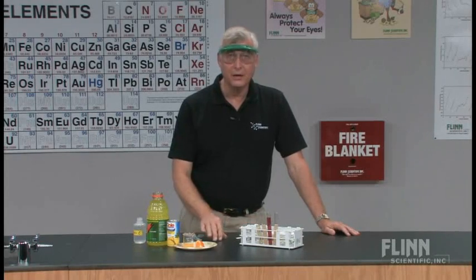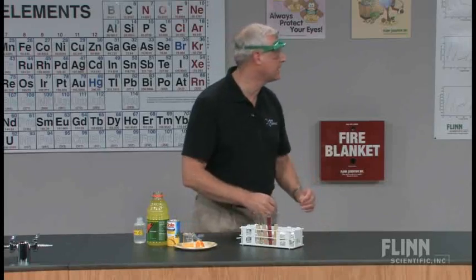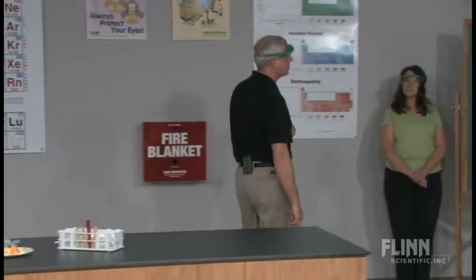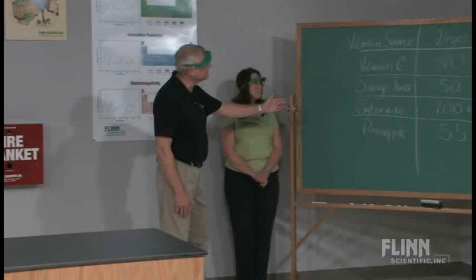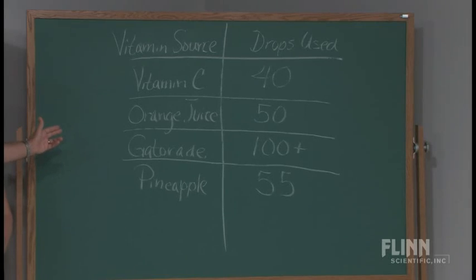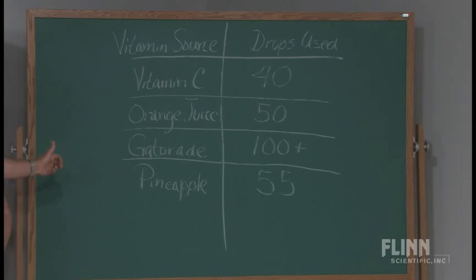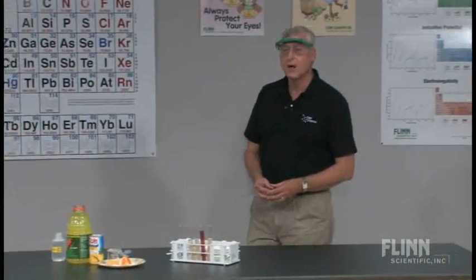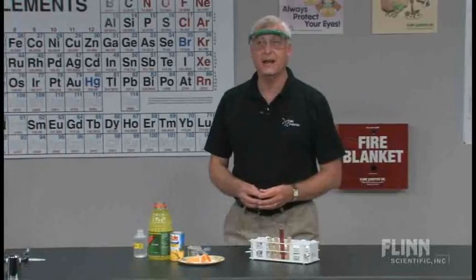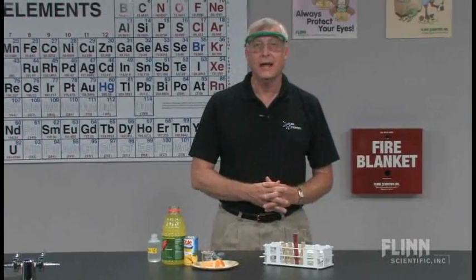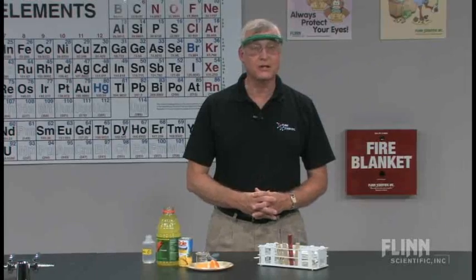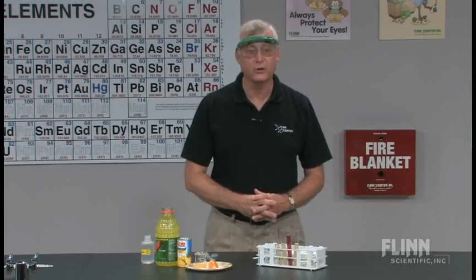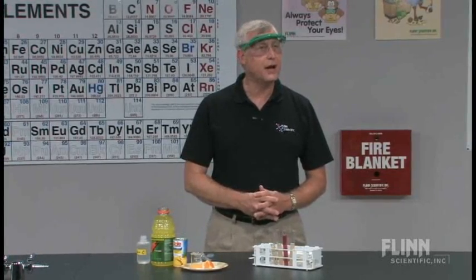This is a nice lab. You can use it qualitatively just by counting drops and comparing. As we see on the board, Gatorade has very little Vitamin C content. Pineapple had the next least amount, and fresh orange juice had the most of the three juices compared today, relative to our Vitamin C standard. The accompanying documentation will show you how to do the mathematics and calculate the actual amount of Vitamin C in milligrams per milliliter in the juices if required. So — Vitamin C titration with dichloroindophenol.